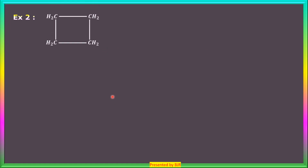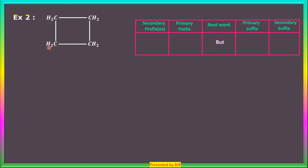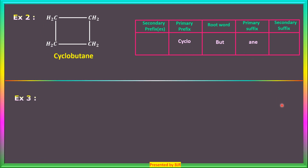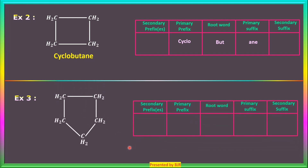Next example: four carbon atoms are forming a closed chain. The root word is 'but' because four carbon atoms are there, and only carbon-carbon single bonds are present, so the primary suffix is 'ane'. There is no secondary suffix because no functional group has been attached. The primary prefix is 'cyclo'. The name of this alicyclic compound is cyclobutane. Next example: five carbon atoms are there, root word is 'pent', primary suffix is 'ane', primary prefix is 'cyclo'. The name is cyclopentane.